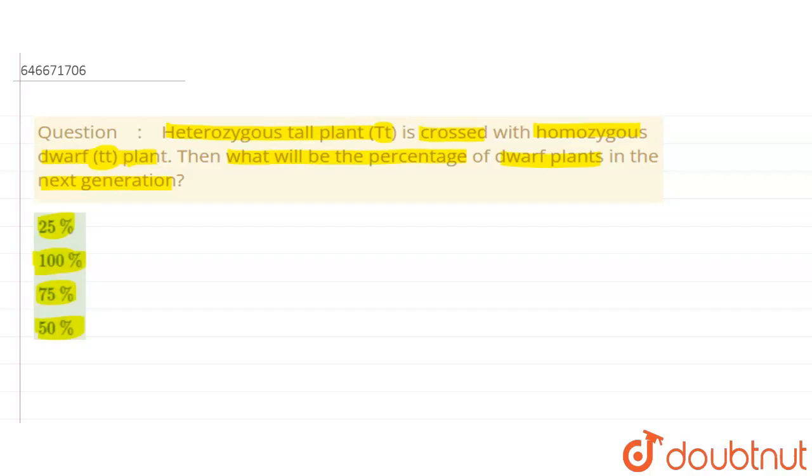So first of all if we see here, capital T small t is crossed with small t small t. What are the gametes that will be formed here? We can say that from here four gametes we will get, that is the capital T, small t, small t, and small t.